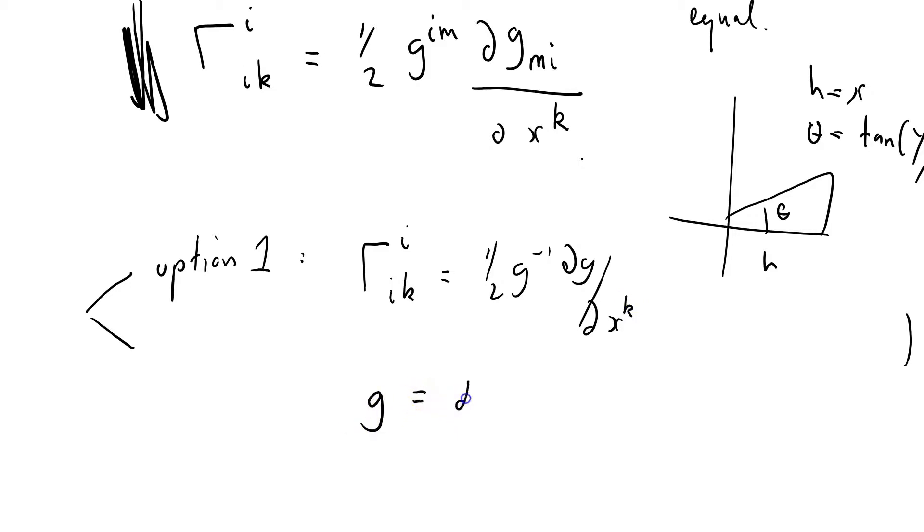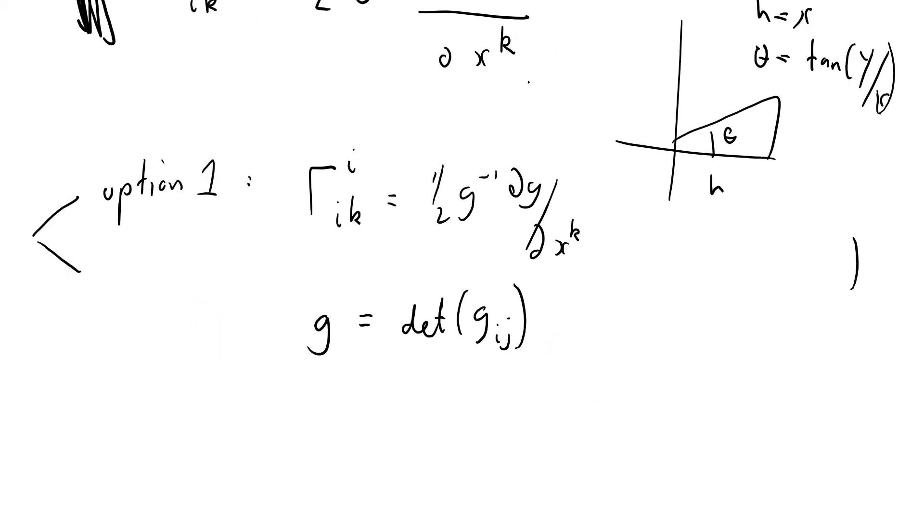Where G equals the determinant of the matrix given by row I column J for the metric tensor. That's option one.